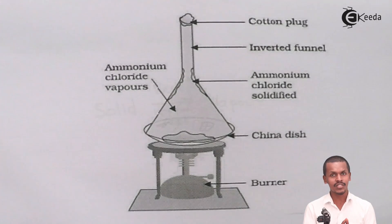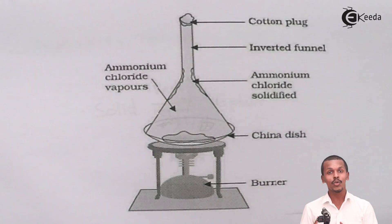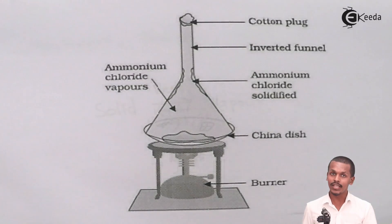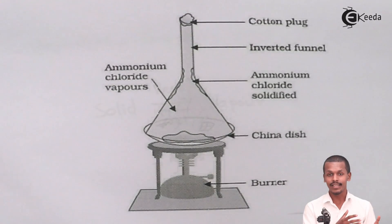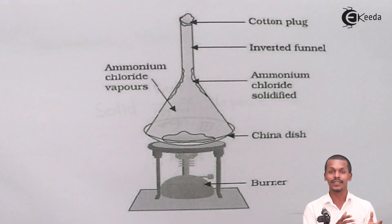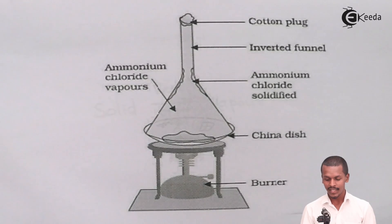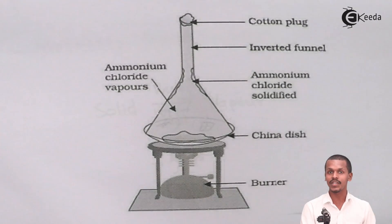We can easily separate and purify ammonium chloride using the sublimation process — for separation from NaCl, or for purification where we evaporate the ammonium chloride and collect the fine crystals that form. These will be a purified product of ammonium chloride. However, this process is only possible for those substances or solids that have the capacity to sublime.